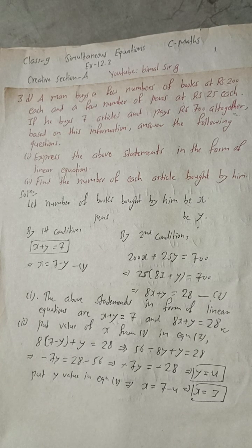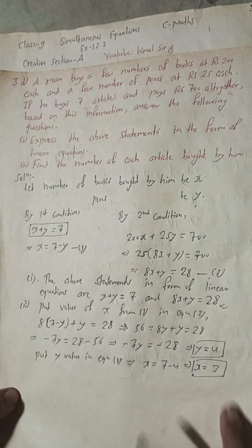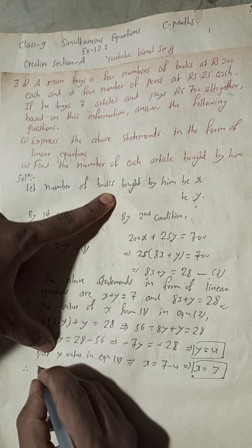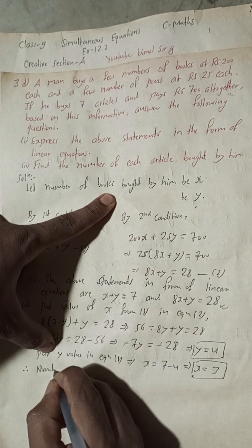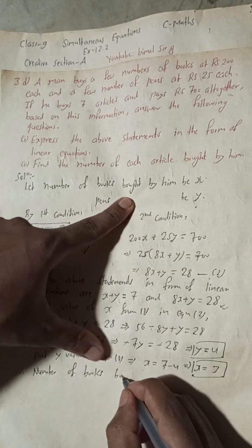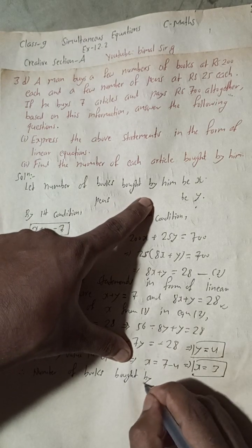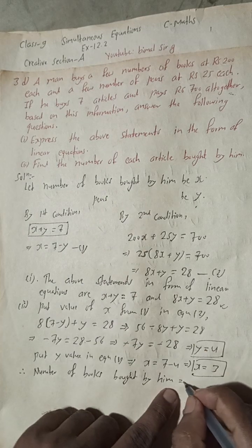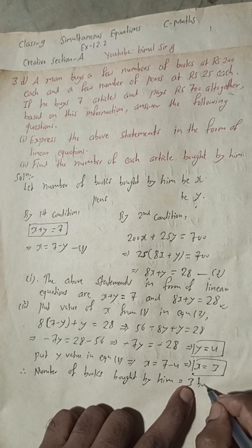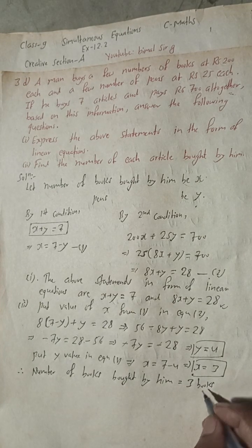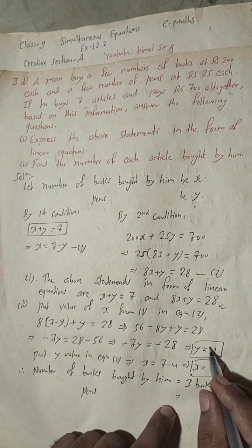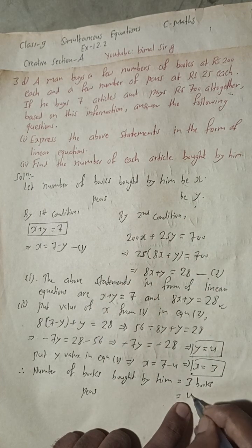So x equals 3 and y equals 4. Therefore, the number of books bought by him is 3, and the number of pens bought by him is 4. This is the required solution of question 3D.